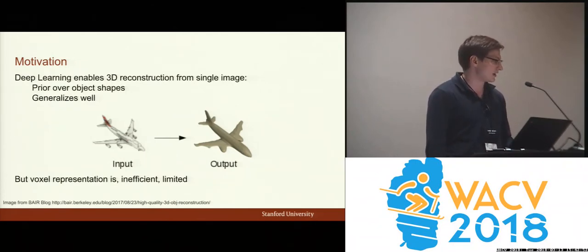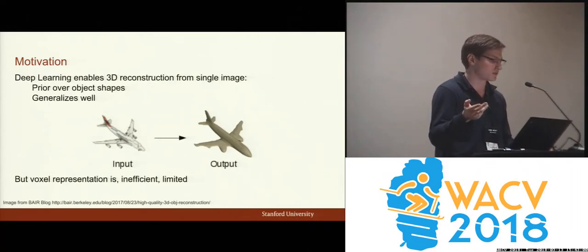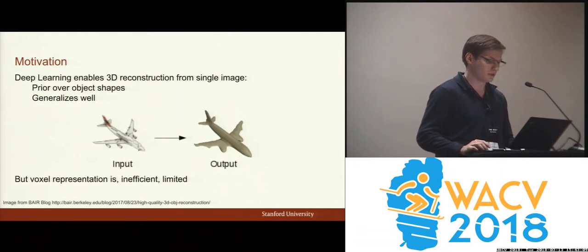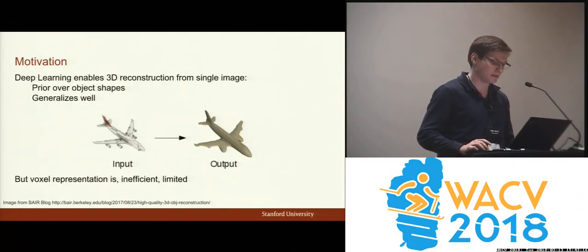In recent years, deep learning has been used to make a lot of progress on it, because if you're constructing from a single image, there's no pixel correspondence you can use, and so it's useful to have a prior over what objects actually look like. But most of this work in deep learning for reconstruction has used the voxel representation, which is inefficient, and has gone directly from an image to a reconstruction, which actually makes the problem harder than it needs to be.